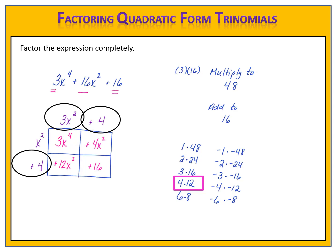I now have my binomials: 3x squared plus 4 times x squared plus 4. As always, I inspect to see if there's any further factoring to do. Is there a greatest common factor in either binomial? No. Is there a difference of perfect squares? No. That is the factored form of my trinomial.